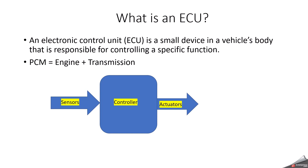ECU is an electronic control unit. It is a small device inside a vehicle that controls one or several electrical systems in that vehicle. It tells electrical systems what to do and how to operate. The ECU's core is a microcontroller and it is controlled by embedded software. An electronic control unit receives input from one or several parts of the vehicle and uses that information to take action if needed.